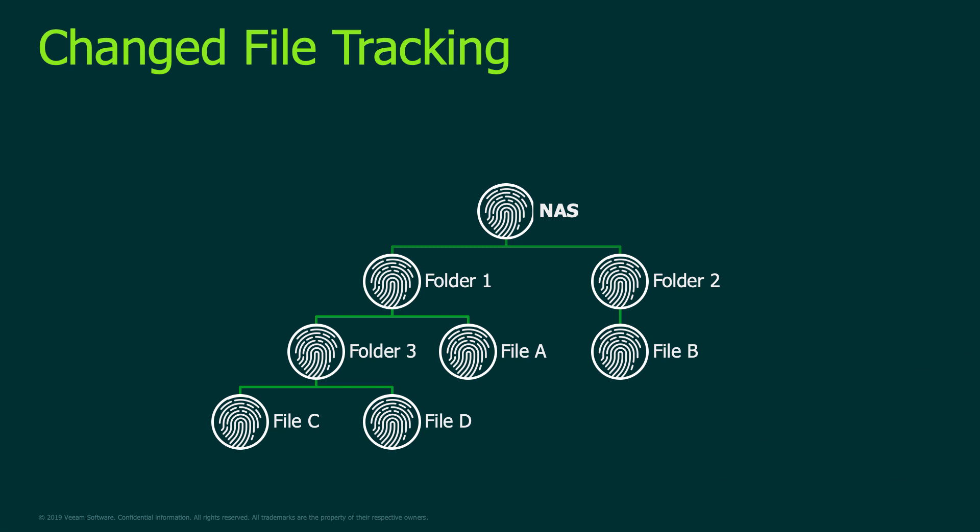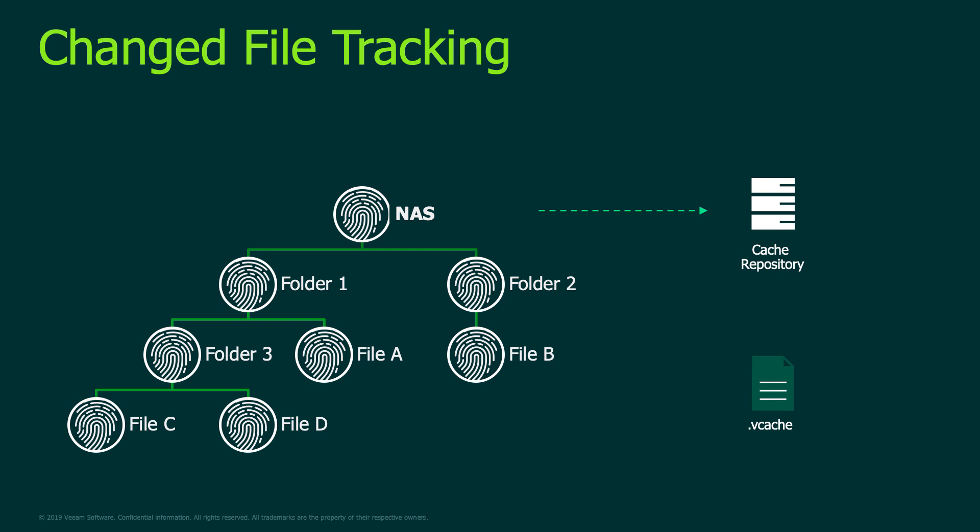Once we've got that first backup done, we have also created something called the vCache that I mentioned. That vCache gives us an understanding of what that file and folder structure looks like. What we're doing is calculating the hash sum based on the name, the size, and the modified date for every item in the share — whether that's folders or files. That happens on the first pass and allows us to see what those attributes are. That value is then stored in the vCache file, which sits in the cache repository.